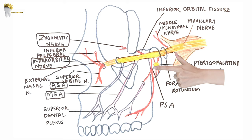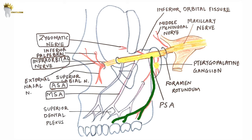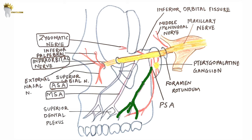The posterior superior alveolar nerve is a branch of the maxillary nerve, given off just before the maxillary nerve enters the infraorbital foramen. There are two PSA branches. One branch remains outside the bone and continues downwards on the posterior surface of the maxilla, providing sensory innervation to the buccal gingiva and buccal mucosa in the region of the maxillary molars. The other branch enters the maxilla through the PSA canal and provides sensory innervation to the mucous membrane of the maxillary sinus.